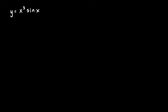Now we'll look at some examples of taking derivatives using the product rule. This first one is y equals x cubed times the sine of x. This is clearly two functions — x cubed is the first and sine of x is the second. The product rule says the derivative will be the first times the derivative of the second, plus the second times the derivative of the first.